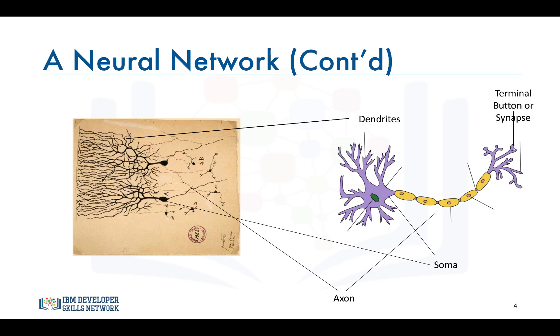So the dendrites receive electrical impulses which carry information or data from sensors or terminal buttons of other adjoining neurons. The dendrites then carry the impulses or data to the soma. In the nucleus, electrical impulses or the data are processed by combining them together. And then they are passed on to the axon. The axon then carries the processed information to the terminal button or synapse.